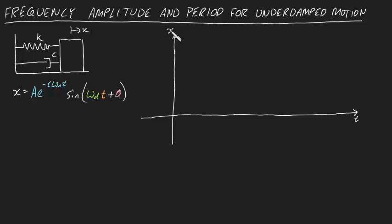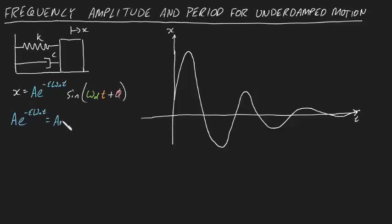If you were to plot this, you'd get a wacky looking sine wave like this. A e to the minus zeta omega n t is the amplitude of the curve in meters, since it's the coefficient of the sine function. This means the amplitude must decay away exponentially.